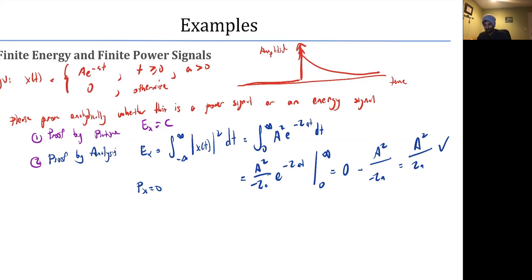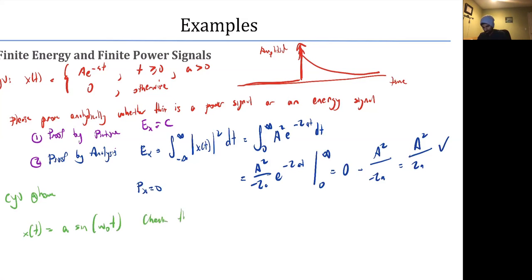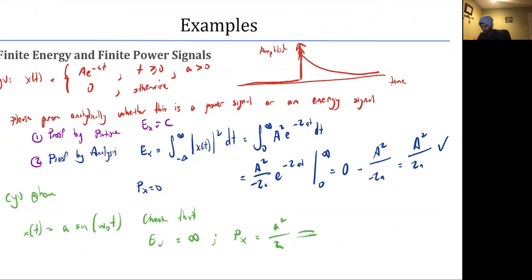Another check your understanding at home: given x(t) = A sin(ωt), verify that E_x = ∞ and P_x = A²/2. If these hold, this would be a power signal.